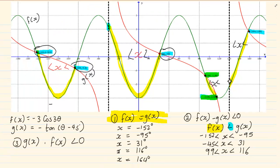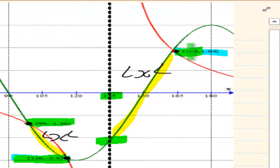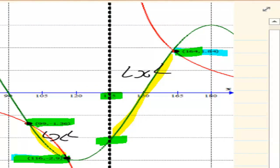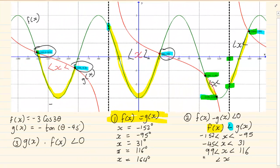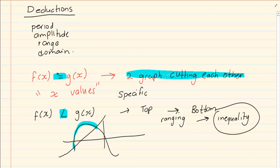Then our last one — it's going from here. We know that that value is 135 and it's going till 164. So we have x again — from 135 till 164. So you must realize that when I have an inequality, my answer is also going to be an inequality. But when I have a specific equal to sign, then my answer is also going to be specific.